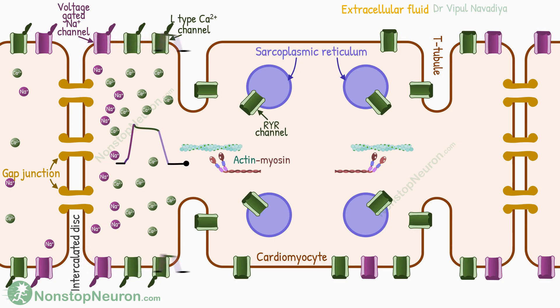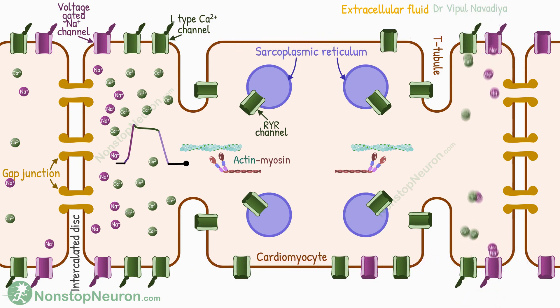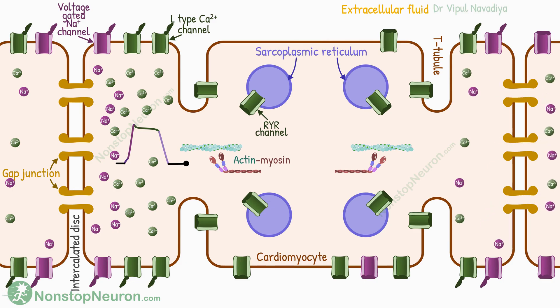This excitation spreads all over the cell membrane, stimulating the next cell in the same manner in which this cell got excited. So this is how impulses spread in cardiac muscle.